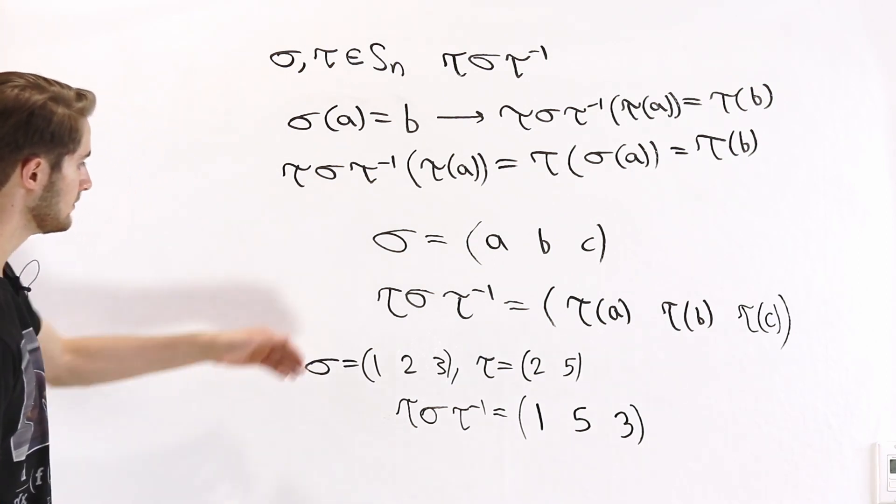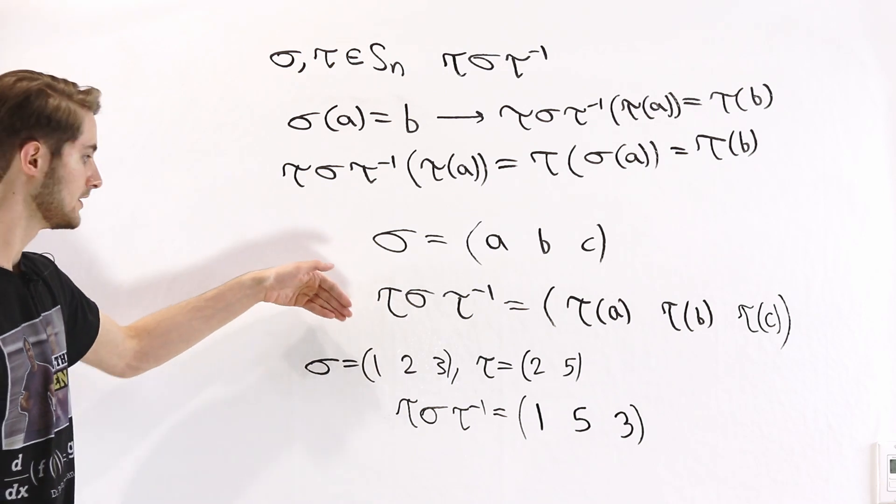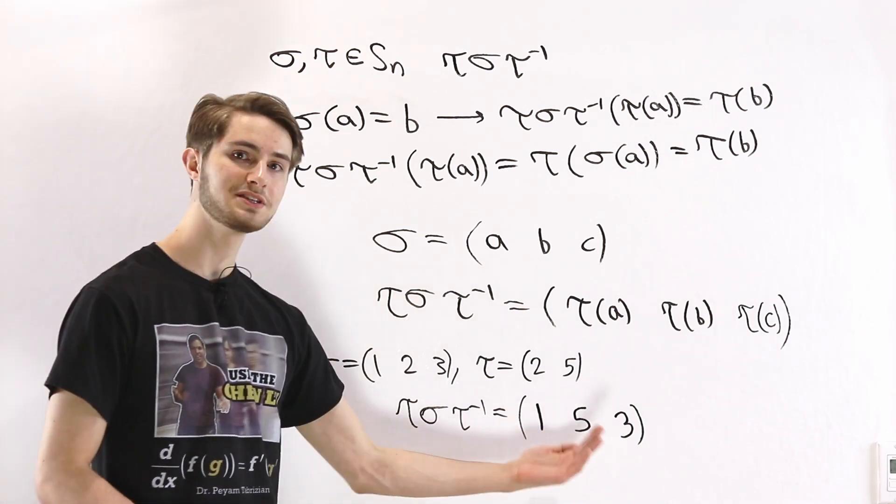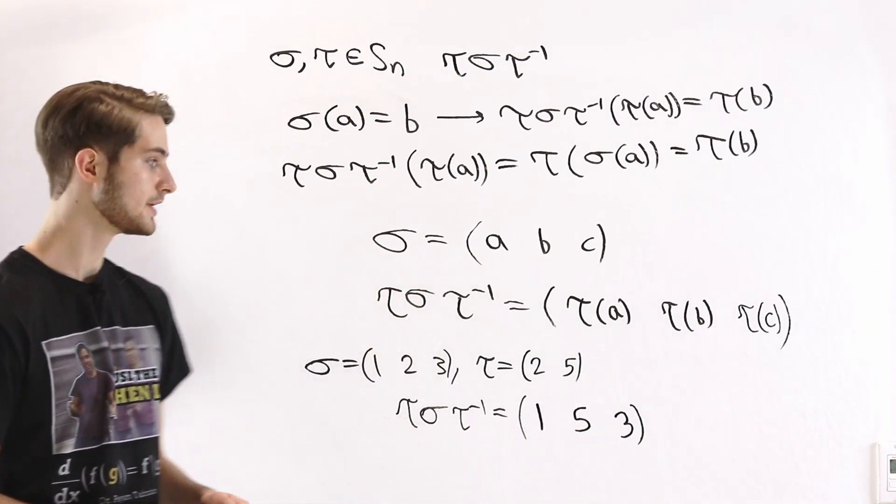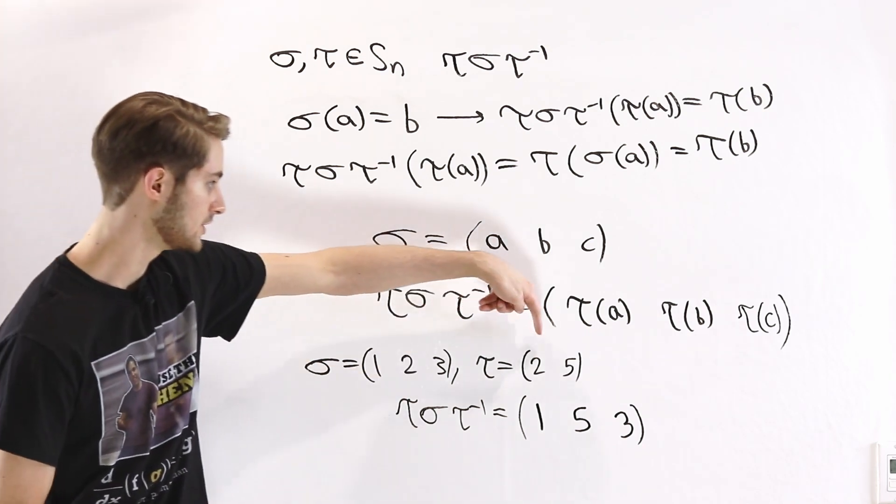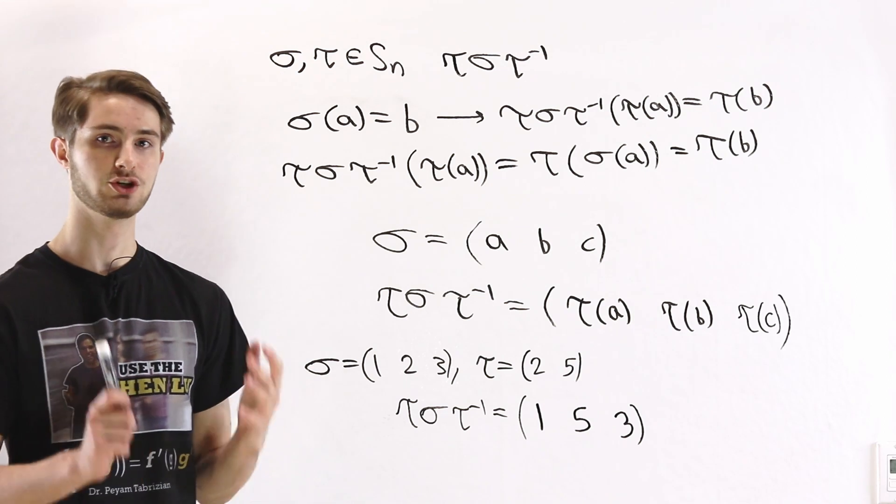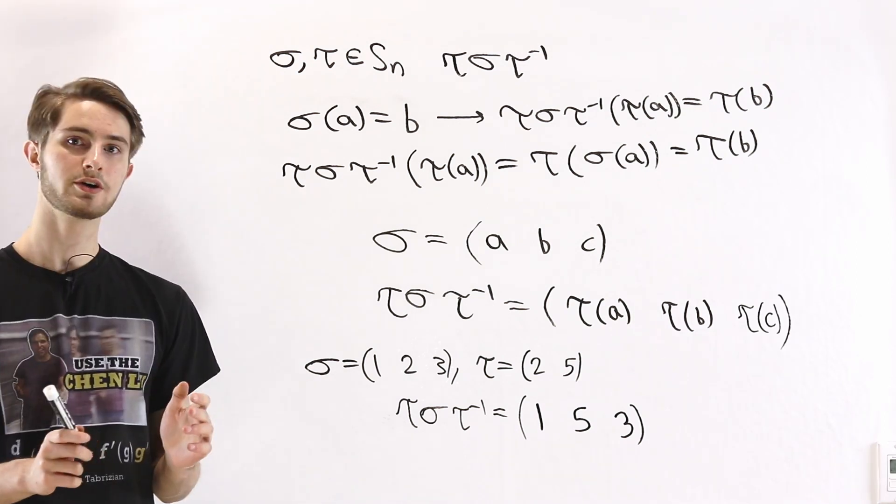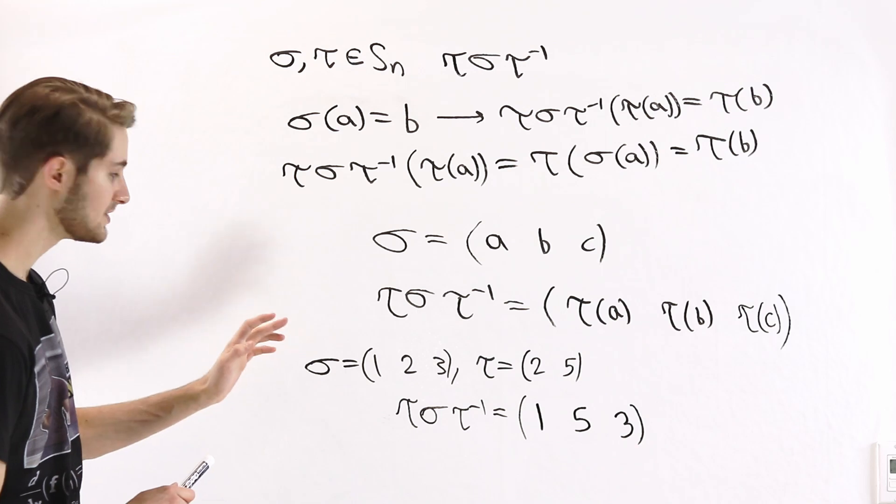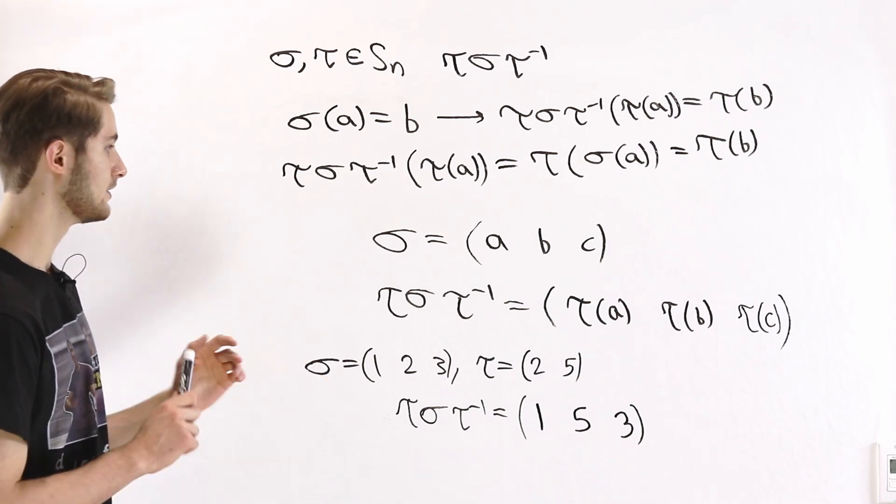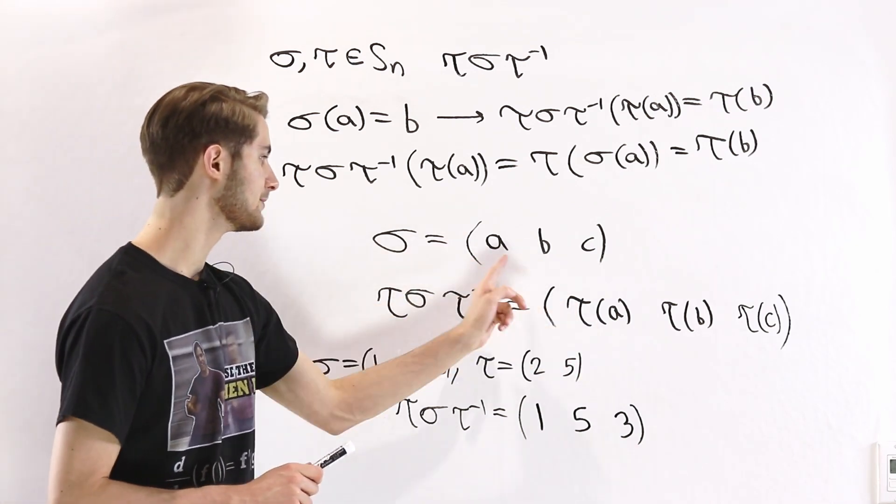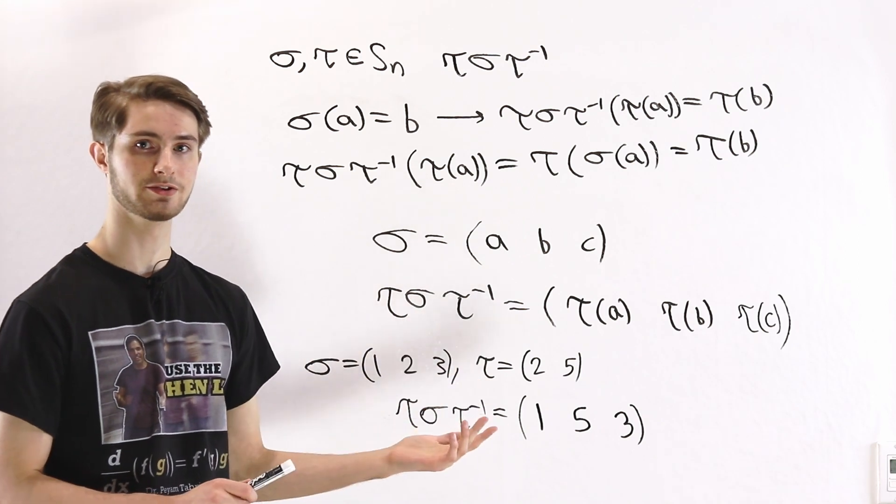But we say that conjugation preserves this cycle type. In this example, if we start with a 3 cycle, then after we conjugate, we're going to get another 3 cycle. If we had instead started with a transposition, after we conjugate, we're also going to end up with a transposition. So that's how conjugation works in the symmetric group. We keep the cycle exactly how it is, and all we do is re-label the letters inside the cycles.